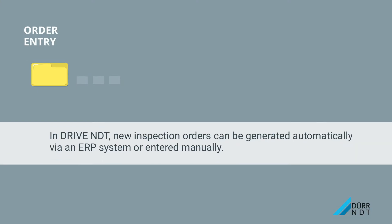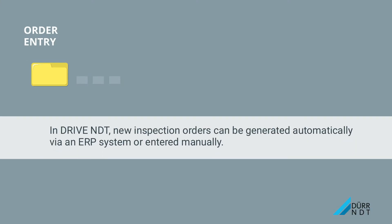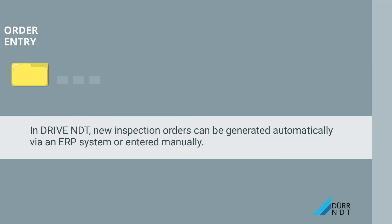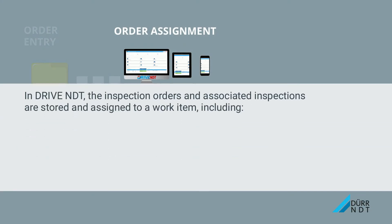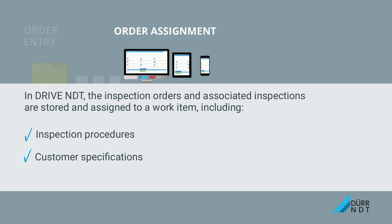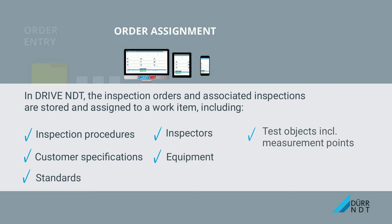In Drive NDT, new inspection orders can be generated automatically via an ERP system or entered manually. The inspection orders and associated inspections are stored and assigned to a work item, including inspection procedures, customer specifications, standards, inspectors, and equipment. Test objects inclusive of measurement points and templates for individual test reports are also assigned.